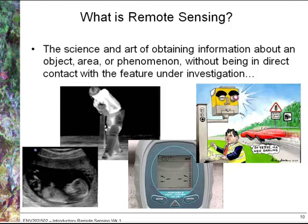So first of all we have remote, which means at a distance from something, and sensing is to gain information about. This can be through a number of different means. As examples up there on the screen, I've got an ultrasound of a young child, the snickometer at a cricket match, and also looking at the heat or thermal imagery of the cricket player. We've got a fish finder using echo sound or sonar, and also a speed camera. So they're all different forms of remote sensing.